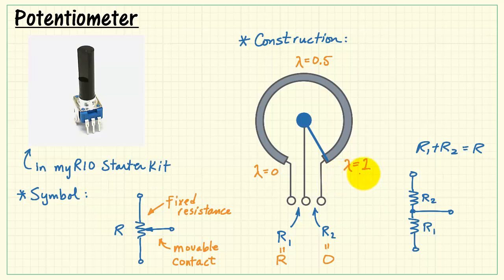Let's be more specific about where lambda enters in. It turns out that R1 is lambda times R, and R2, which goes in the opposite direction, is (1 minus lambda) times R.